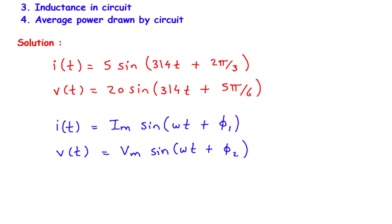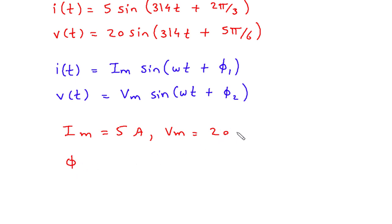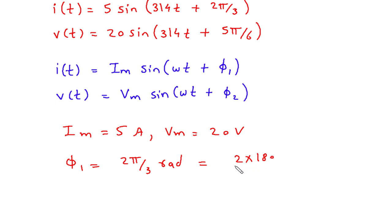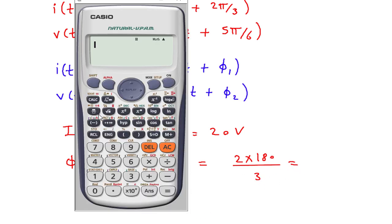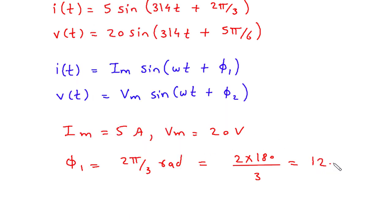From comparison, we can see the value of Im = 5 amperes and Vm = 20 volts. Then φ1 is for current, so it is 2π/3 radians. Converting to degrees: 2 × 180 / 3 = 120 degrees.